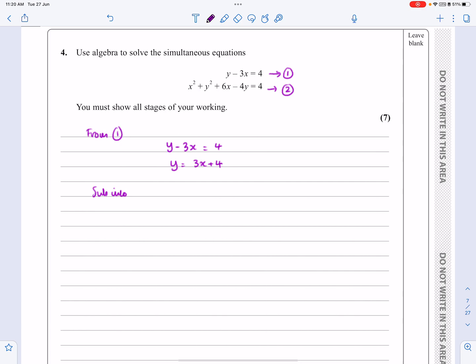Substitute that into number two. So here, y² becomes (3x + 4)² because it's y squared, and y becomes 3x + 4, and we're just going to get a quadratic that we'll need to solve.